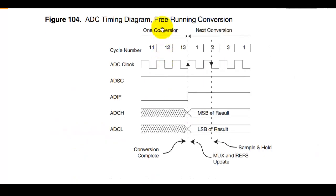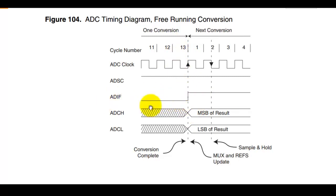This is the ADC timing diagram for free running conversion. It always takes 13 clock cycles to complete each conversion. When conversion is complete, the ADIF bit goes high — monitor ADIF and then read the results.